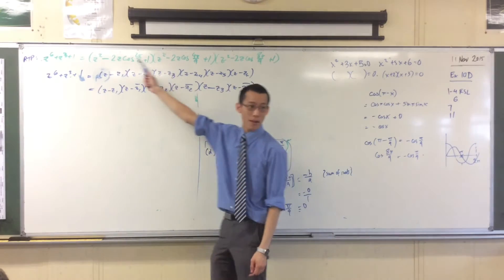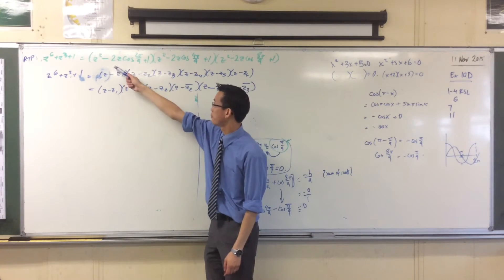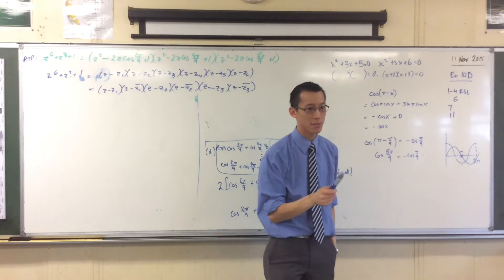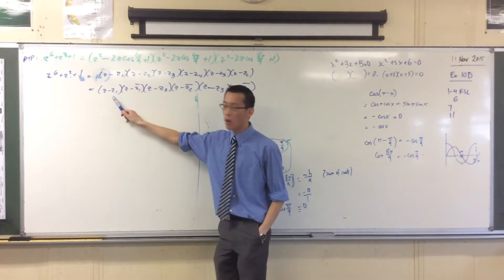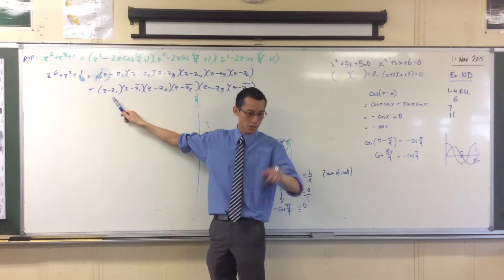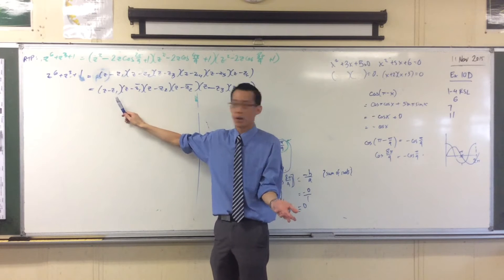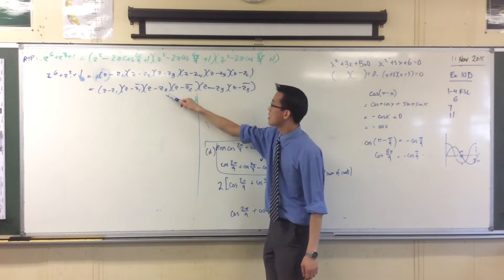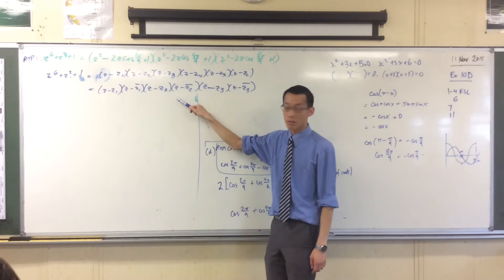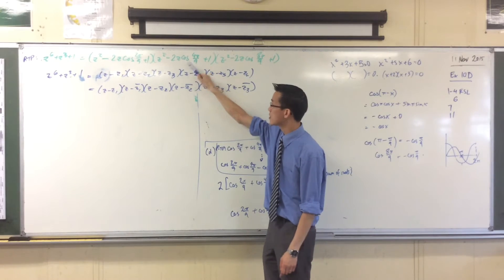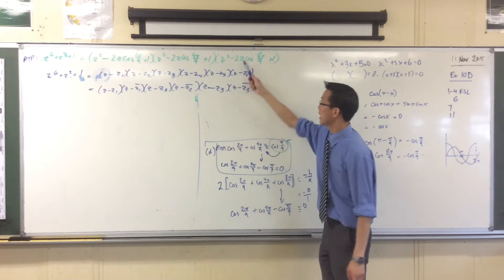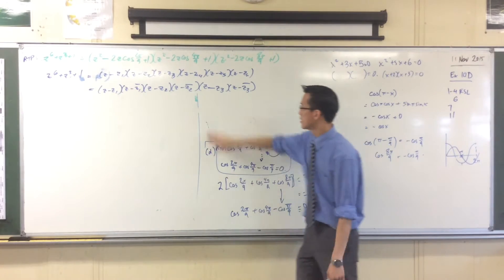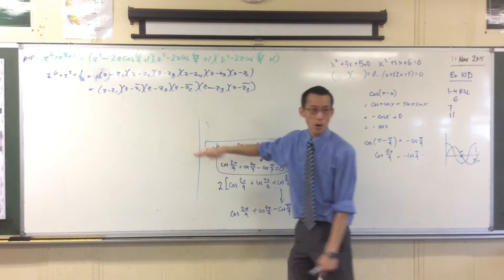This is still not obvious how I get there, because where does that come from? But I have some clues. For instance, z1 — just go back to your diagram — what's the argument of z1? It's 2π/9, it's going to come from this pair. What's the argument of z2? It's 4π/9, so this is going to come from this pair. And lastly, this last one will come from this pair.